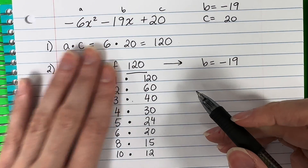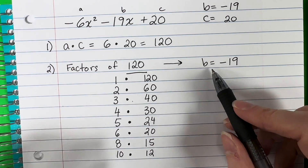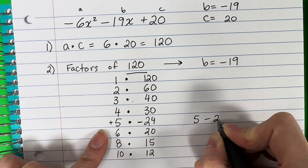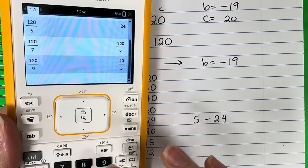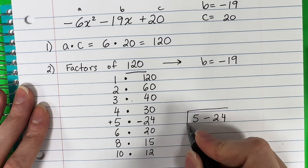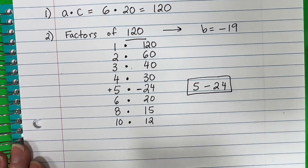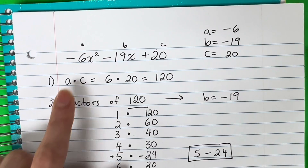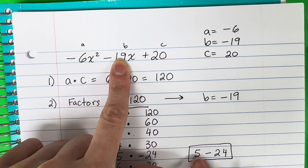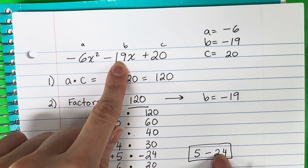Now add or subtract the factor pairs to get negative 19, which is our B. It would have to be positive 5 and negative 24 — so 5 minus 24 equals negative 19. You'll need to try making pairs positive or negative until you find what gives you negative 19. Next, copy the expression but replace the middle term: instead of negative 19x, write positive 5x minus 24x, because 5 minus 24 equals negative 19. It's the same thing, just expanded.